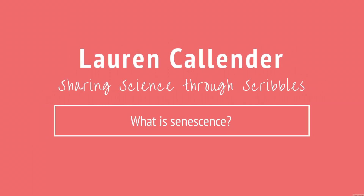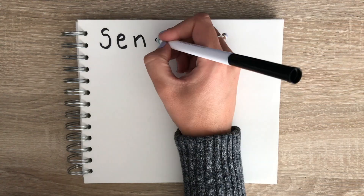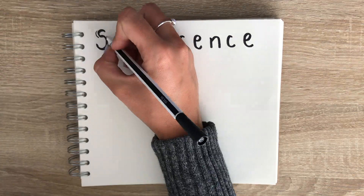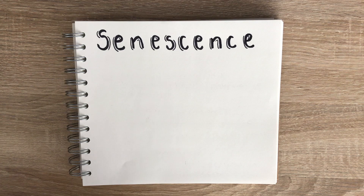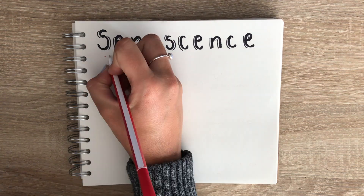Hi everyone. I touched on senescence in the previous ageing tutorial, but the field of senescence is actually quite large, so I wanted to dedicate a whole tutorial to explaining this in more detail.